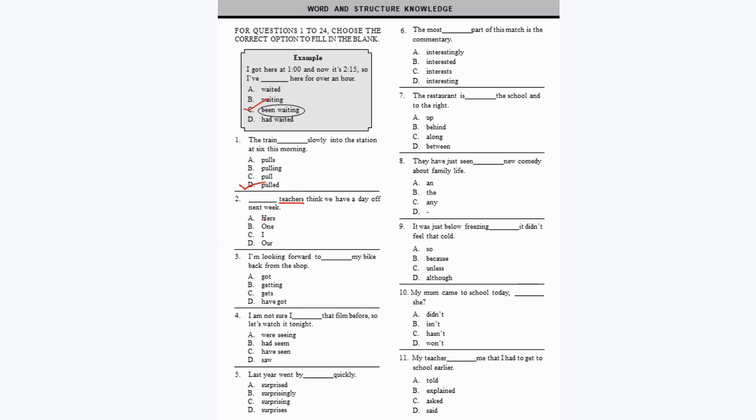Question 2: 'Dash teachers think we have a day off next week.' We have a noun, teachers. 'Hers' cannot be used, 'one teachers' is wrong, 'I teachers' is wrong — it should be 'our teachers.' So the answer is: 'Our teachers think we have a day off next week.'